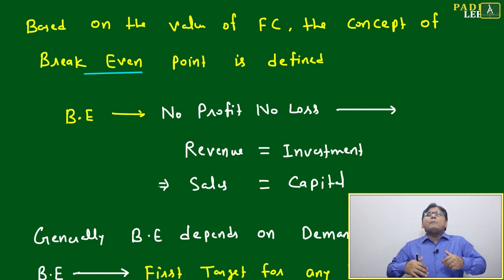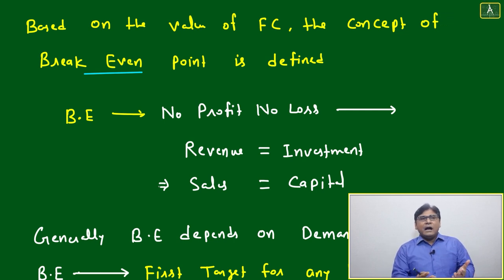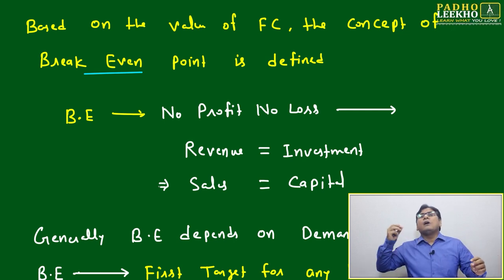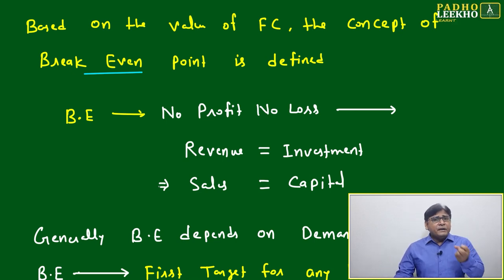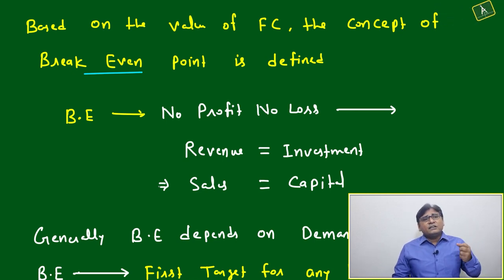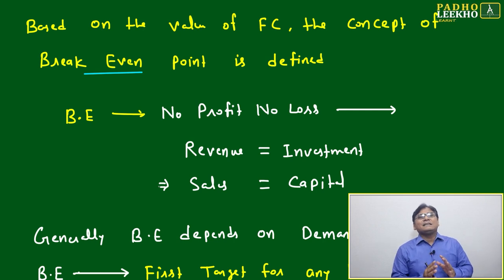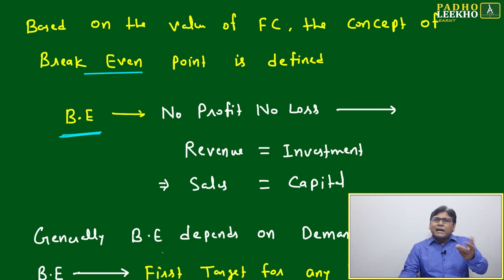Your unavoidable cost is your fixed cost — whether you are producing one unit or 100 units, your fixed cost will be the same. When you start a business, your first target is that your fixed cost should be compensated by your revenue. That point is called break-even.